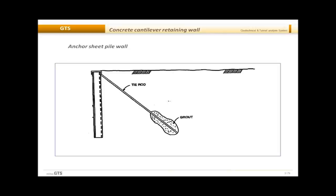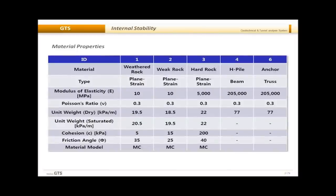Let me talk about the anchored sheet pile wall. The rod inserted into the slope will be grouted for a certain length and ungrouted for another length. From the starting point to a certain length it is ungrouted, meaning it has no connection with the surrounding material. In the hard rock region it is grouted with cement slurry, bonding the rod with the surrounding material. The material types to be defined include weathered rock, weak rock, hard rock, pile as a beam element, and anchor as a truss element — all as plane strain type materials.